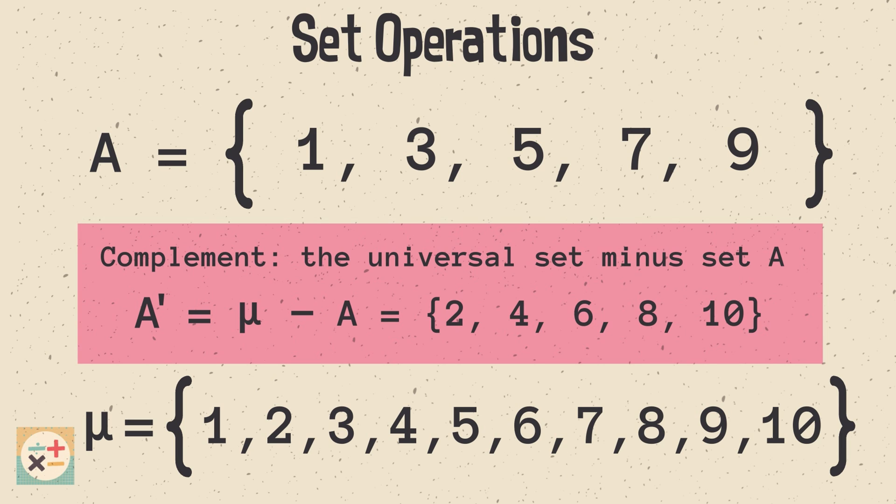It essentially encompasses everything that needs to be considered for a specific scenario. For example, if you're working with sets of colors, the universal set might include all the possible colors in existence. If you're dealing with sets of numbers, the universal set could be the set of all real numbers.